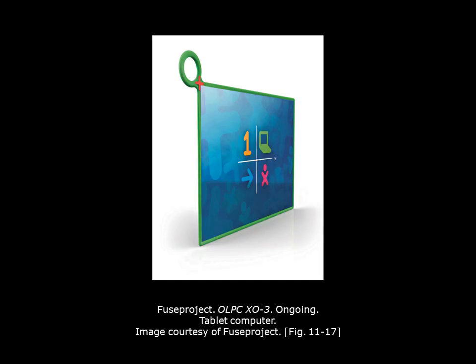Our last category is product design. This example is the OLPC XO3 computer designed by Fuse Project. OLPC stands for One Laptop Per Child — an attempt to make computers accessible to every child on Earth at $100 per unit. It is designed to defy language limitations, with content strongly associated with symbols and images. This combines product design with a graphic design interface meant to be understood universally.